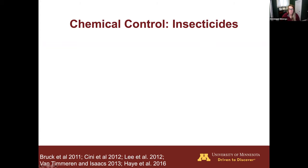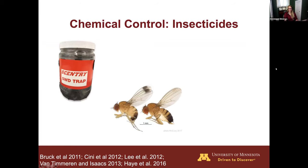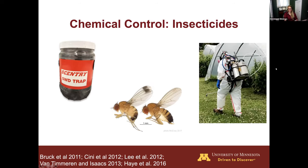Next, we move into chemical control — the use of insecticides. The recommended pattern is to set up a monitoring system within your crop and, at the first detection of SWD, get onto a weekly spray monitoring program. One complication is proper identification, as these flies are very small. You can use resources like FruitEdge or other state resources that provide pest alerts for when SWD is first detected. The insecticide program does recommend a weekly spray program because of their short generation time.